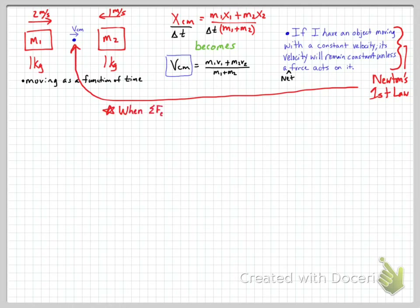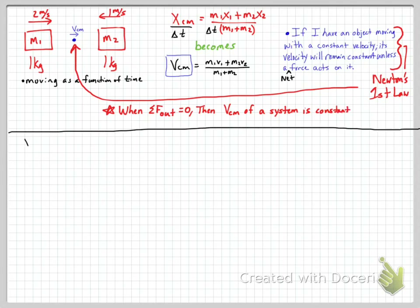When the net outside force on the system is zero, the velocity of center of mass of the system remains constant. As long as Newton's first law applies and nothing changes it, we can assume this.